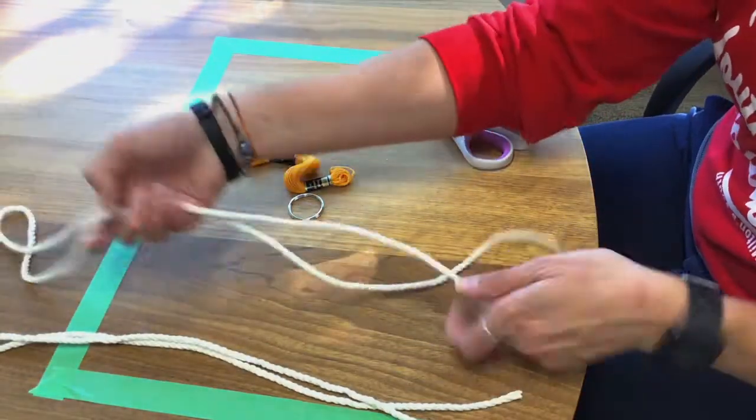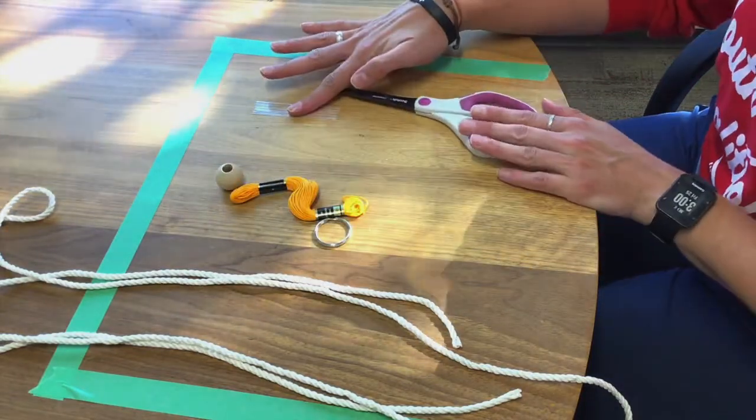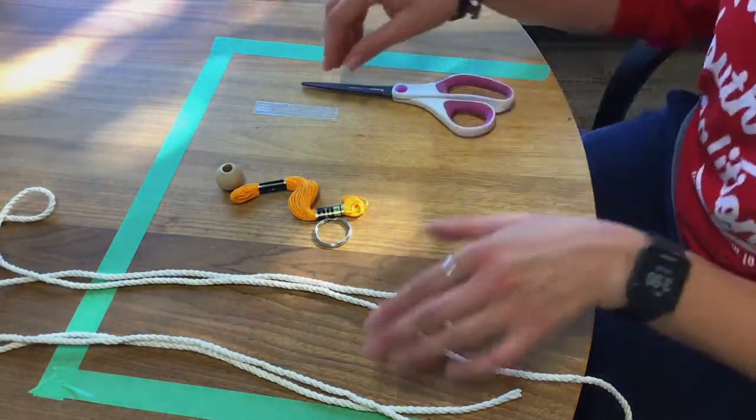In your kit you should have two pieces of 50 inch rope, a large jump ring, colored floss, a wooden bead, and you're also going to need a piece of tape and some scissors.